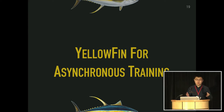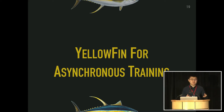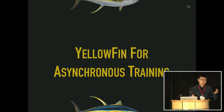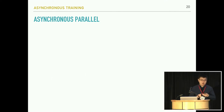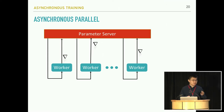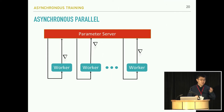I will briefly describe how we can adapt Yellowfin for asynchronous training. The Yellowfin tuner can naturally fit into this situation because recent research showed that asynchronous training needs additional tuning for momentum, and Yellowfin can tune the momentum on the fly. In the conventional distributed training setting, we use synchronous systems with a synchronization lock to synchronize parameters on each worker. For asynchronous training, the system removes the synchronization lock so that the parameter server and workers can communicate model parameters or gradients asynchronously without waiting.